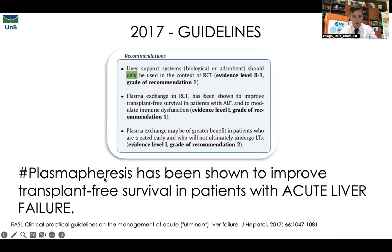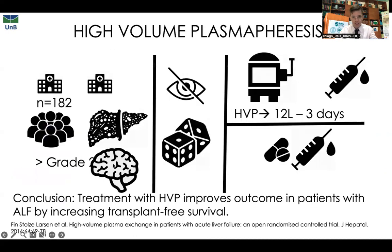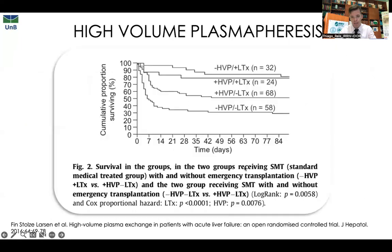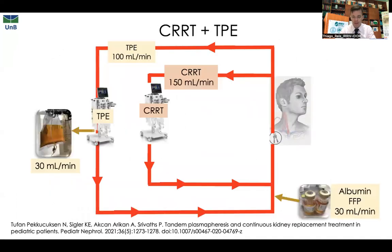There is also an indication for high-volume plasmapheresis for patients with acute liver failure as artificial liver support — a grade one recommendation. This comes from a trial comparing standard of care versus high-volume plasma exchange using 12 liters of fresh frozen plasma. Patients who received a transplant did not benefit, but patients who did not receive a liver transplant had improved survival. Since you don't know in advance whether a patient will be transplanted, this is theoretically the therapy of choice for artificial liver support.